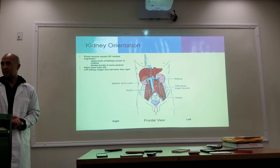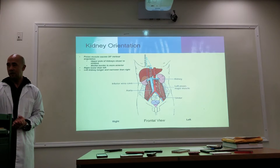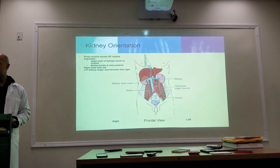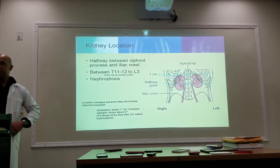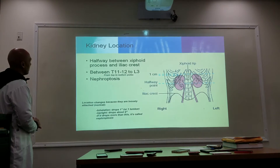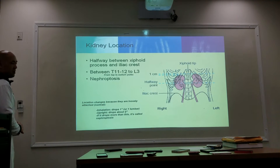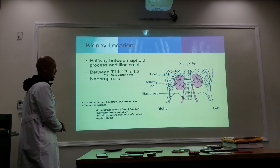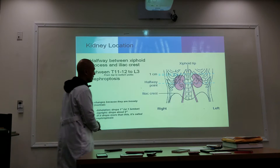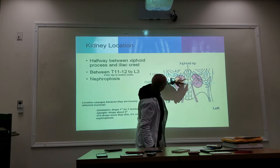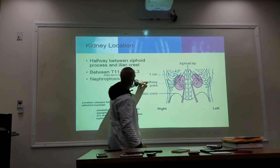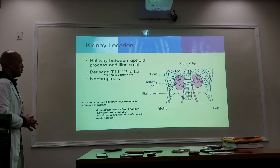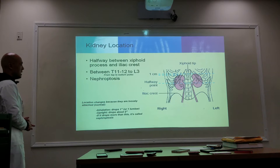The right kidney is lower than the left. The left kidney is longer and narrower than the right. The kidneys are halfway between the xiphoid process and the iliac crest. The midline is L1-L2, so the middle of the kidneys is at the level between L1 and L2. They start at the level of T11-T12 and extend down to approximately L3.